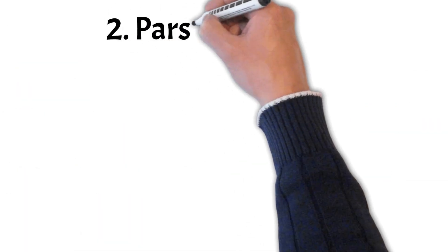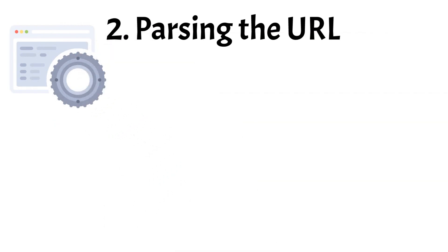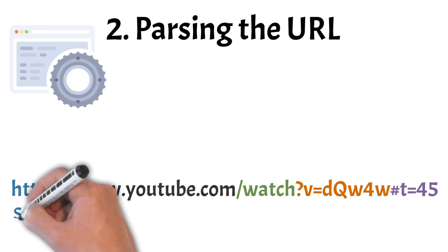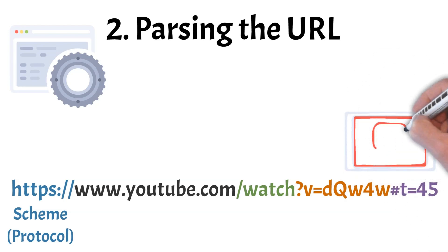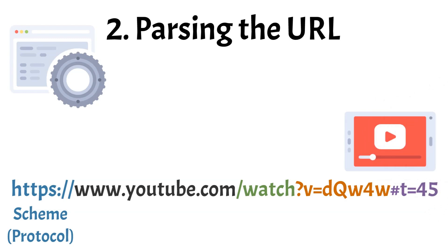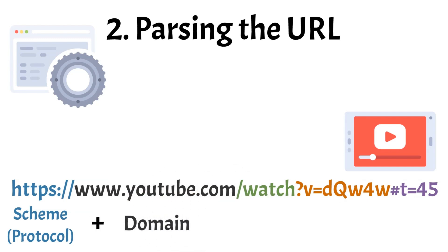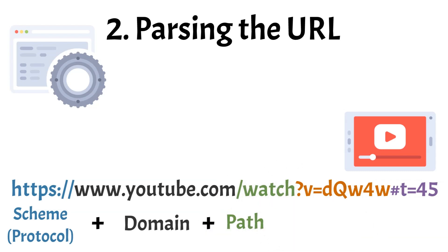Now let's take a closer look at the URL itself. When you hit enter, your browser doesn't just blindly forward the whole address — it first parses the URL to understand its structure. The browser identifies HTTPS as the protocol, which tells it to use a secure connection. After the protocol, we have www.youtube.com, the domain name, which will later resolve into an IP address. The slash watch part is the path, pointing to a specific page on the site.